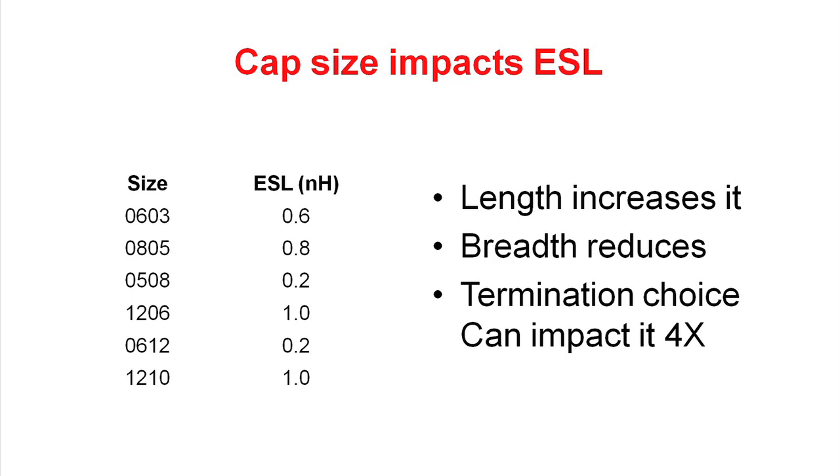The size and shape of a capacitor impact the series inductance. In this column, we have the size of the capacitor. 0603 is a capacitor that's 60 mils long and 30 mils across. The first thing we see is a 0603 capacitor has about 0.6 nanohenries of inductance. The 0805, which is slightly longer, has a slightly larger amount of inductance, and it's pretty well related to the length of the capacitor.